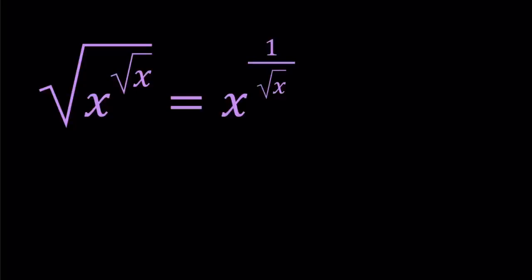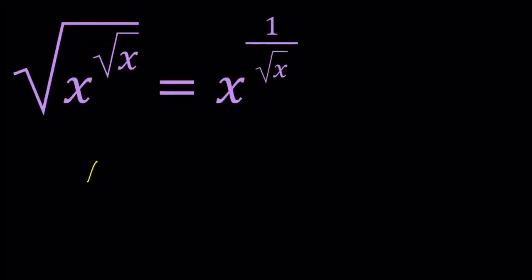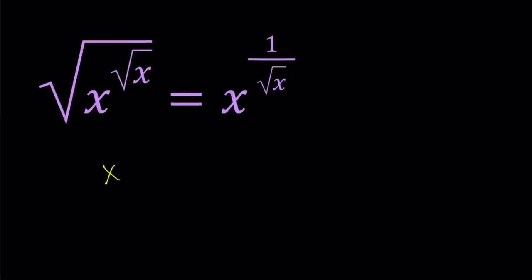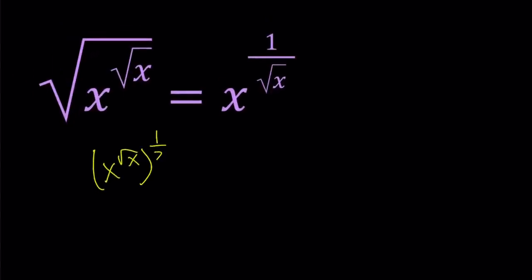First of all, I'd like to write the square root on the outside as to the power 1 half. So let's go ahead and write this as x to the power square root of x to the power 1 half, which is the same thing as the square root, and then it's just going to equal what it is, x to the power 1 over square root of x.